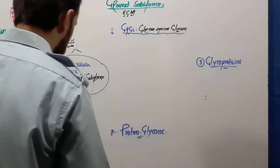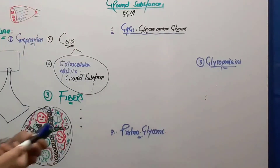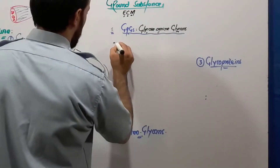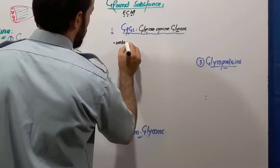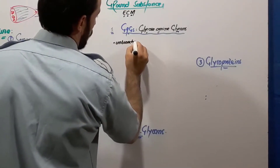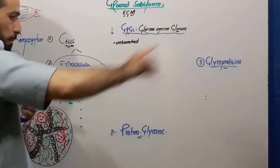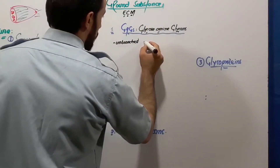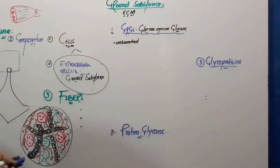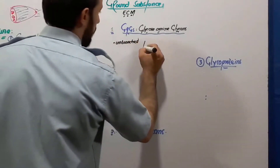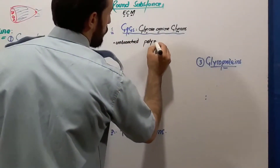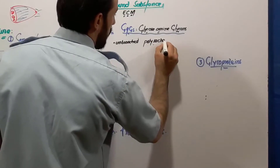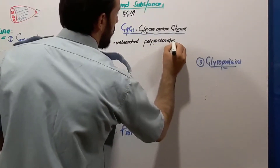What are glycosaminoglycans? These are unbranched polysaccharides — very simply, there is no branch of these polymers. We call them unbranched polysaccharides because there are many sugars combined together.